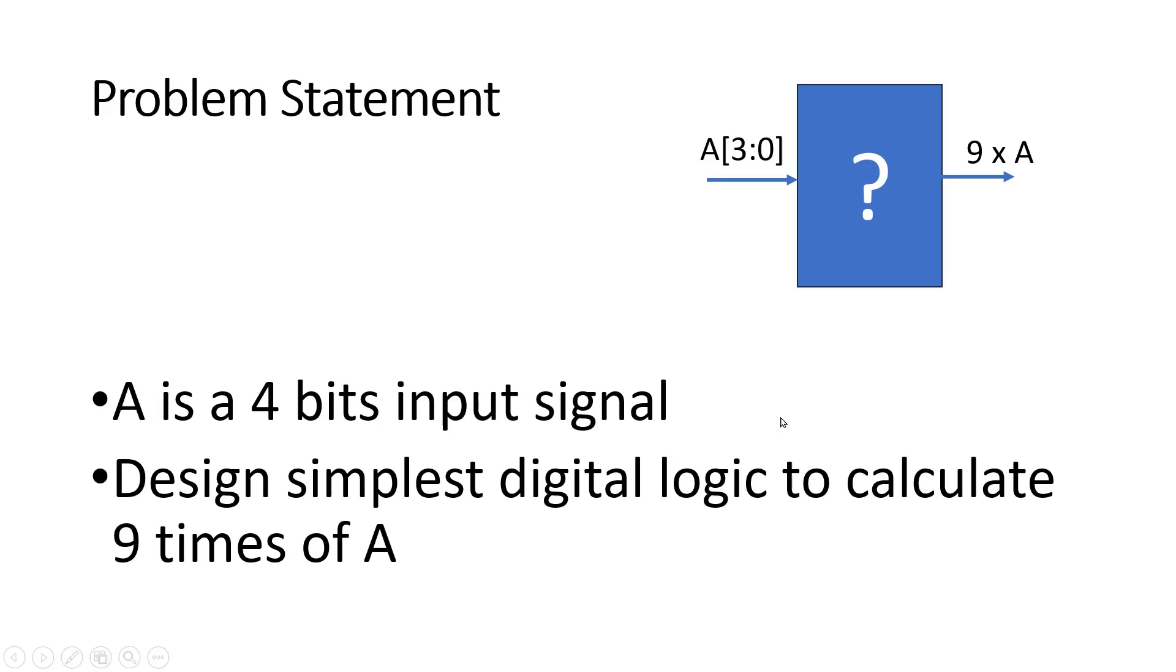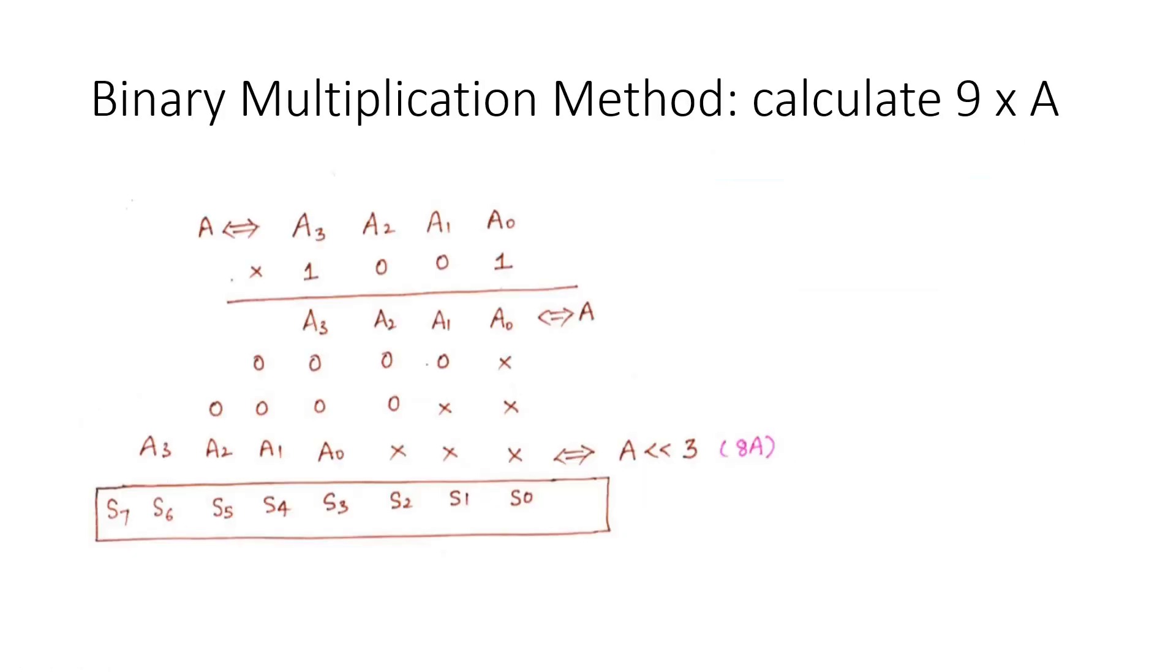Now let me give you a solution, friends. Some of the members gave the right answer in the comment section, but let me repeat it for others. This is the input vector A and this is the number nine. Let us see how we do this multiplication in binary mathematics.